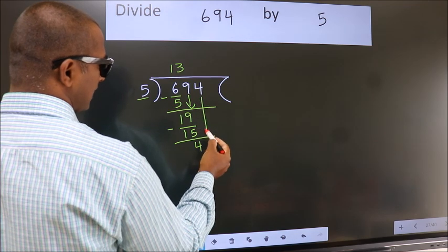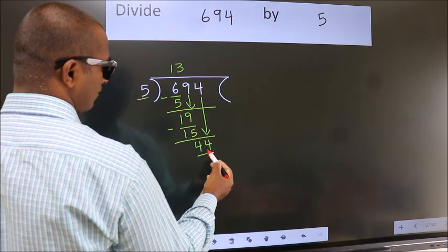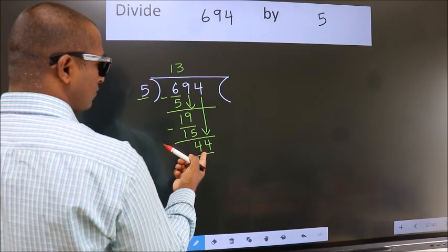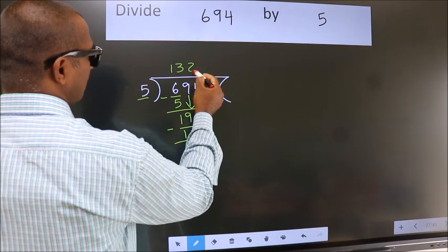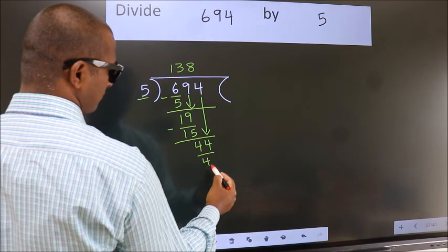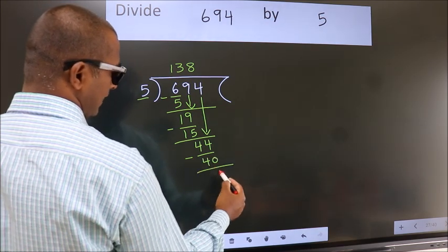After this, bring down the beside number. So 4 down, making 44. A number close to 44 in the 5 times table is 5 times 8 equals 40. Now we subtract. We get 4.